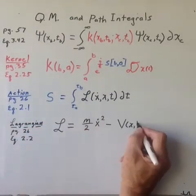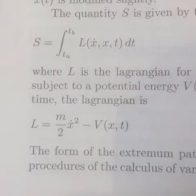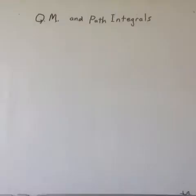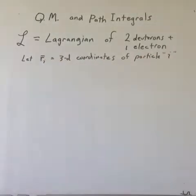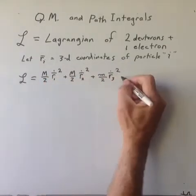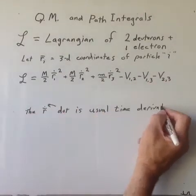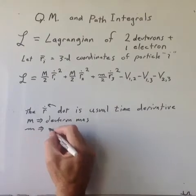Our task is then simply to express the Lagrangian for two deuterons and an electron. We show here the Lagrangian in terms of position vectors r for each particle and the Coulomb interaction potential between each particle. The dot by the variable is the usual convention meaning the time derivative.